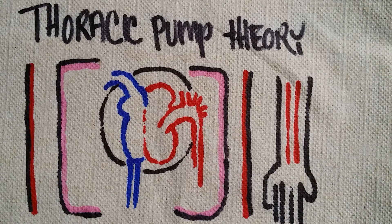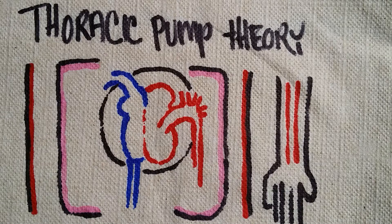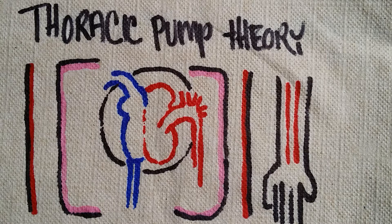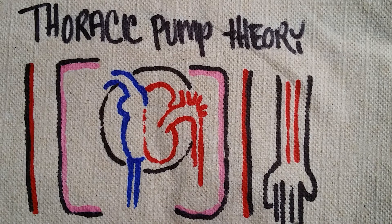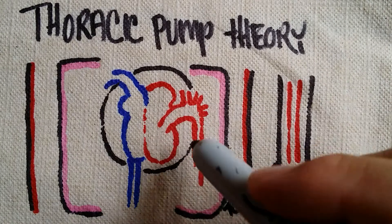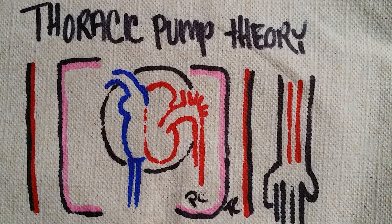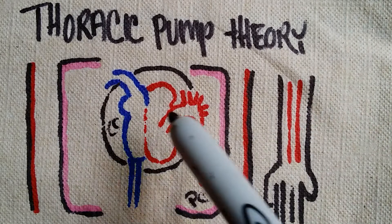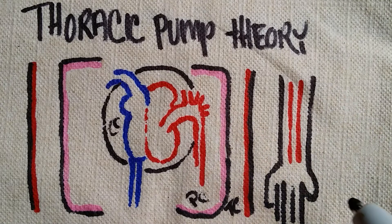The thoracic pump theory states that for systemic circulation to be perfused, you increase and decrease the thoracic cavity, which decreases and increases the cavities that underlie it. We have our coronal plane right here, which means we separate the patient into anterior and posterior halves. This is your thoracic cavity, here is your pulmonic cavity, and here is your cardiac cavity where your heart is. And this is going to represent our systemic circulation.